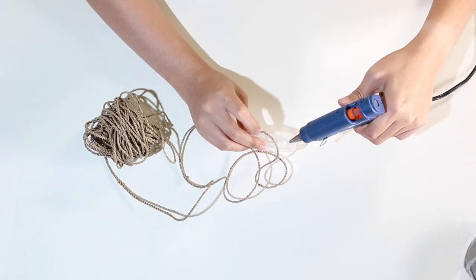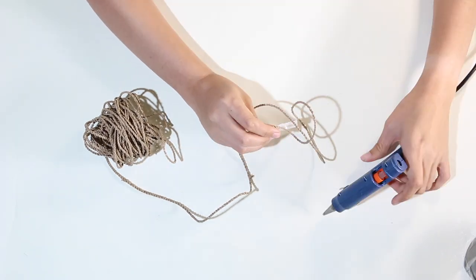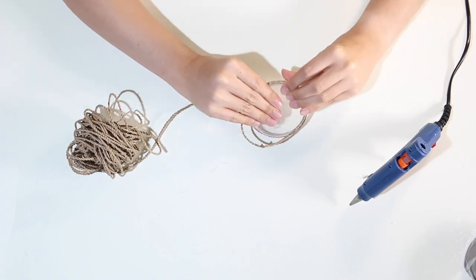Now take the cover and with the glue gun and rope, begin winding the rope all around.